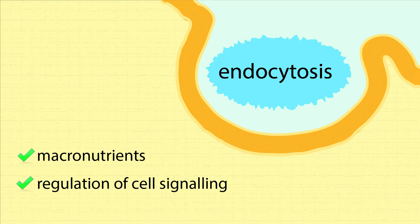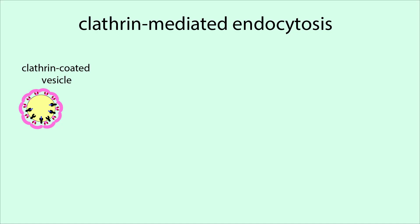So in summary, endocytosis is a process used to bring large molecules into the cell. Receptors and their ligands are often internalized through clathrin-coated vesicles that fuse with early endosomes. Recycled receptors are packaged into vesicles that eventually fuse with the cell membrane, returning them to the cell surface.